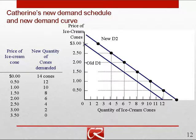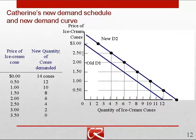There used to be zero demanded at a price of three, now there's two. There used to be two demanded at a price of two fifty, now there's four, and so on down the line. So if there's an increase in the overall level of demand — more demanded at every price — we shift the demand curve to the right. Remember, if there's an increase in the amount people want to buy due to a change in price, we don't shift the demand curve. We simply move from, say, two dollars to one fifty and move down and to the right along the demand curve.